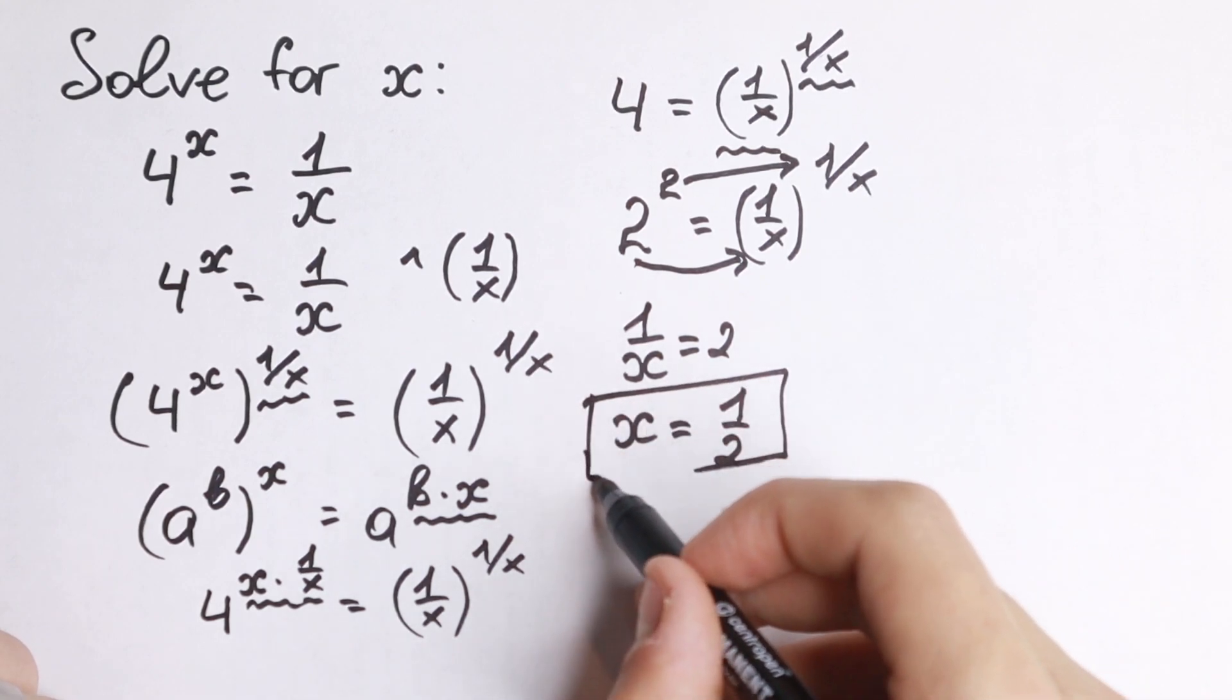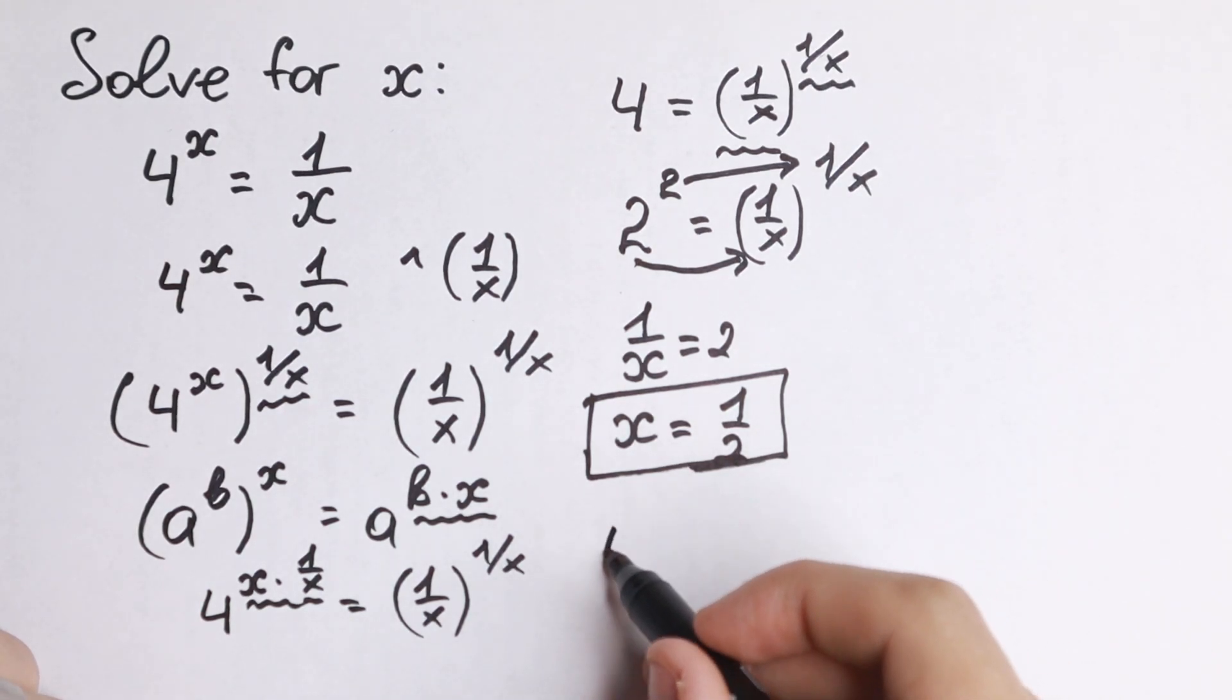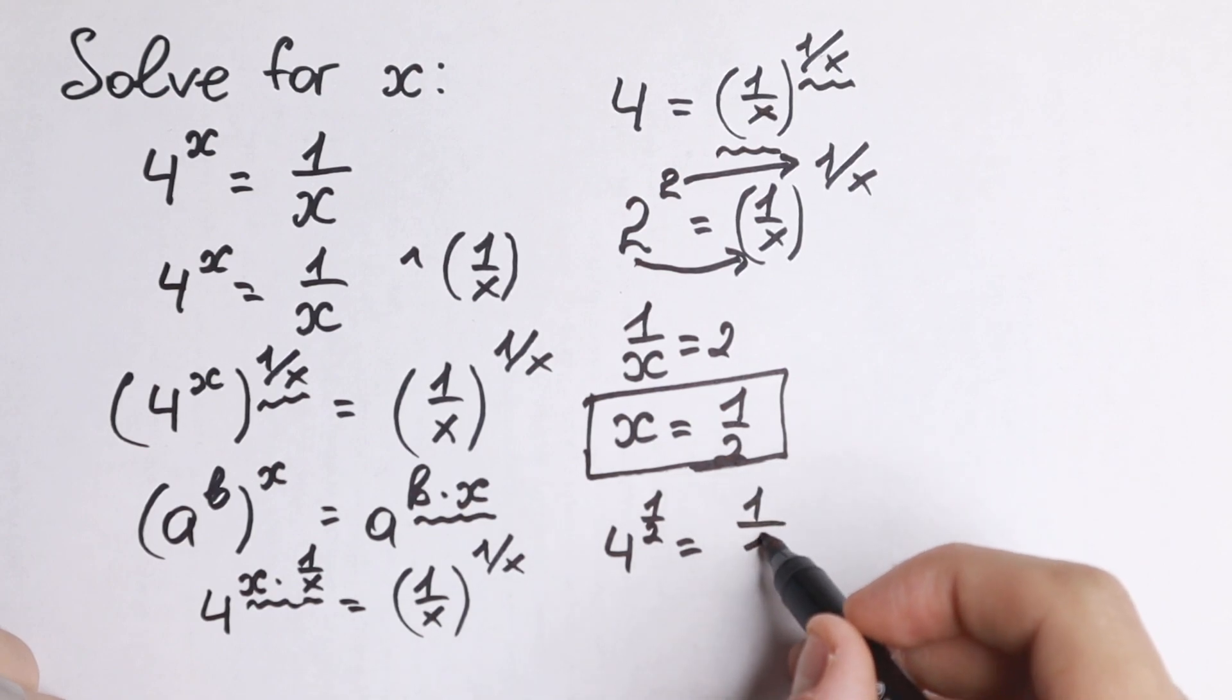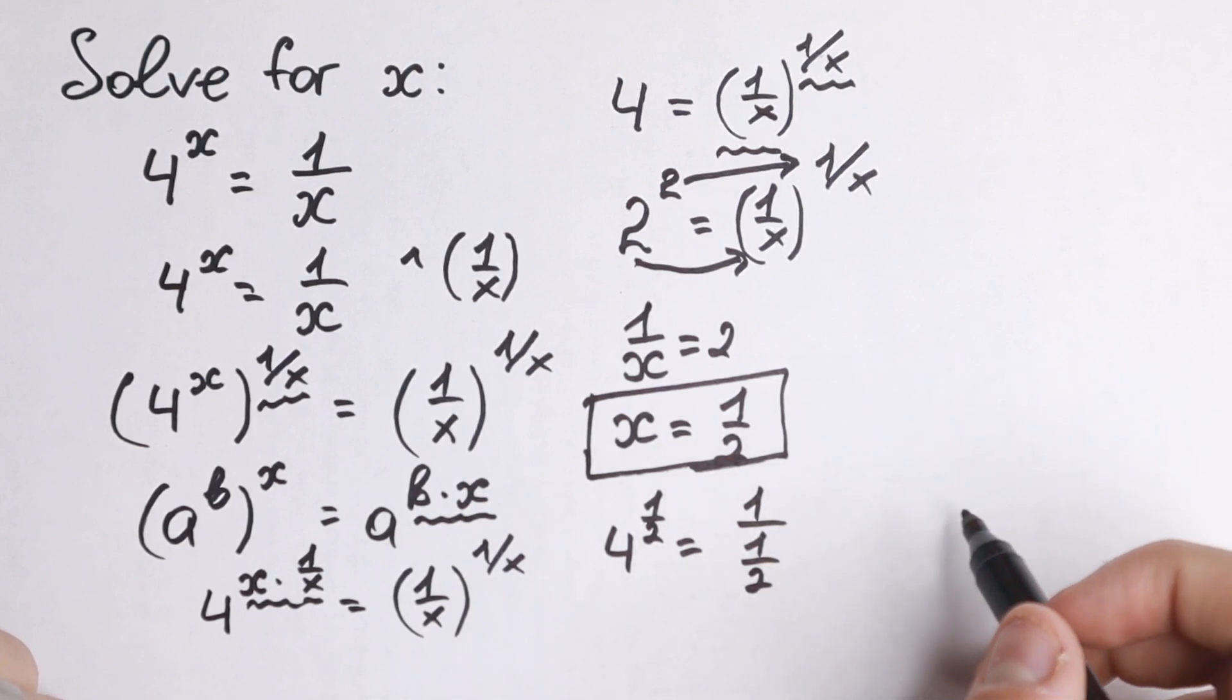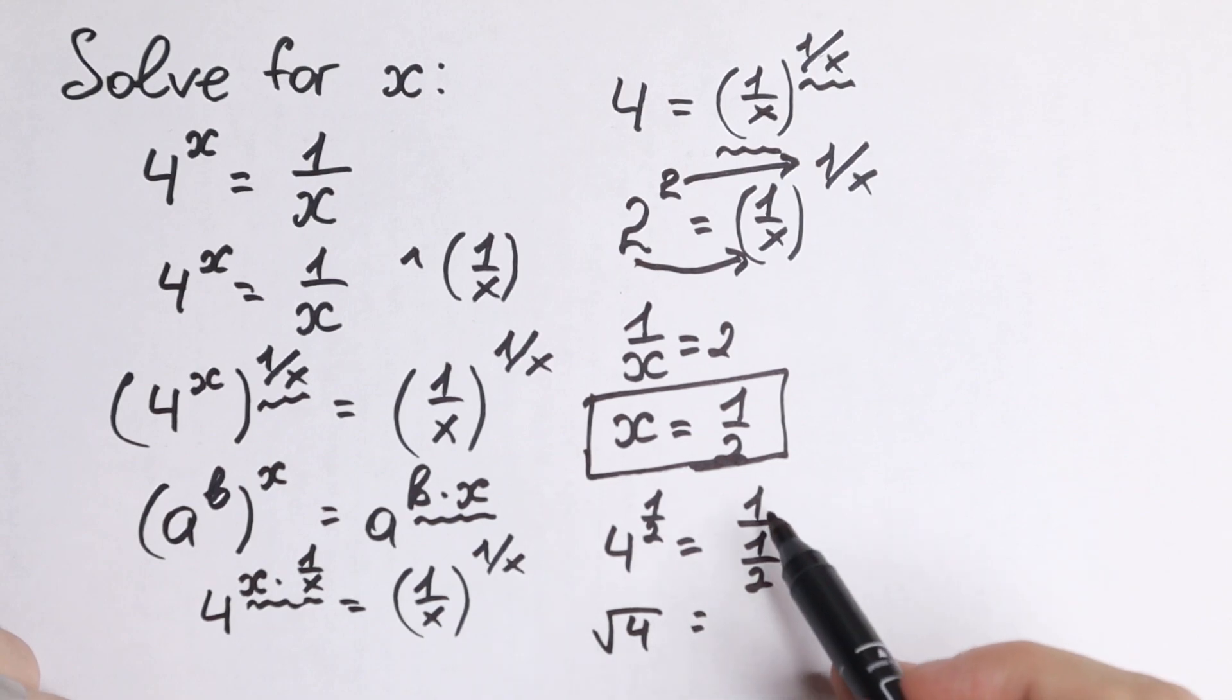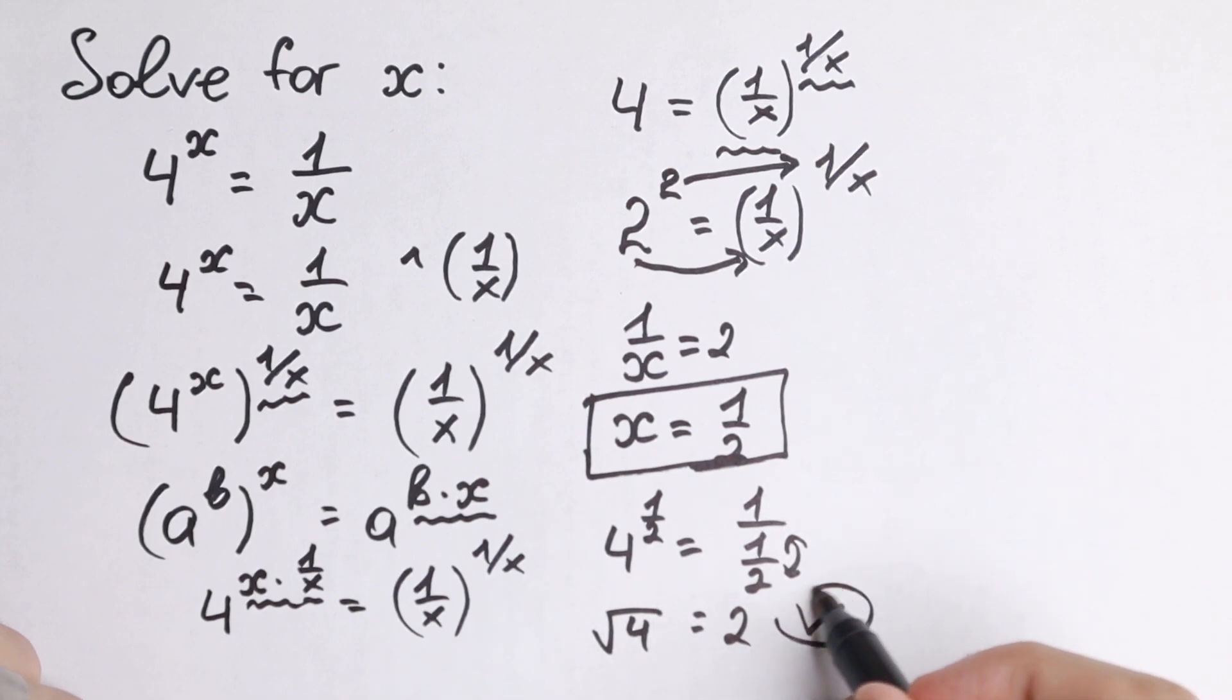Of course we can check it. Let's check it real quick. We have 4 to the power 1 half equal to 1 over 1 half. 4 to the power 1 half is the square root of 4, equal to 1 divided by 1 half, which is 1 times 2. We swapped the numerator and denominator, and we have 2. So this is correct.